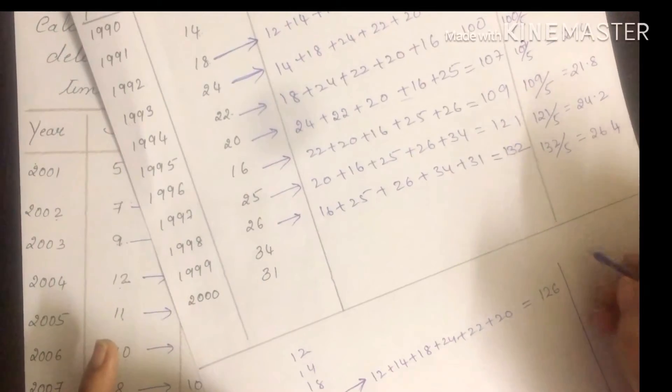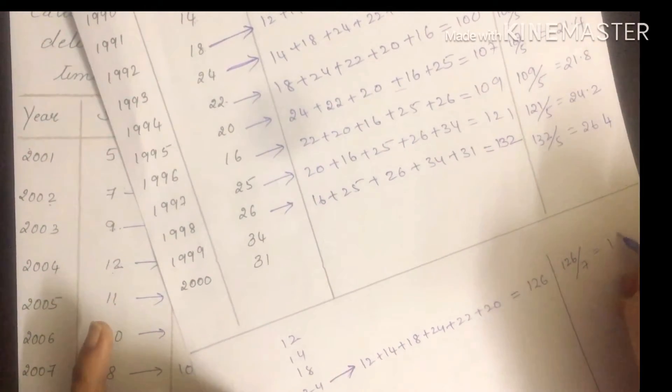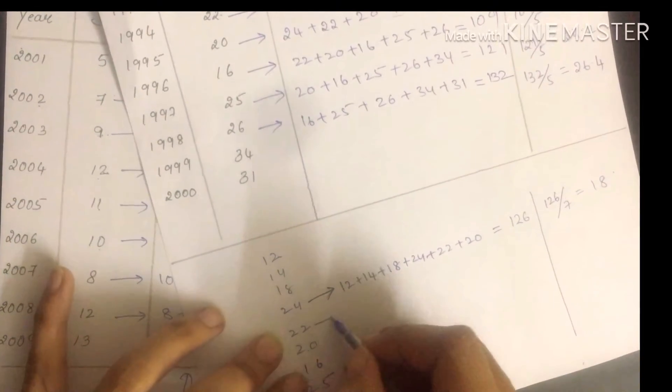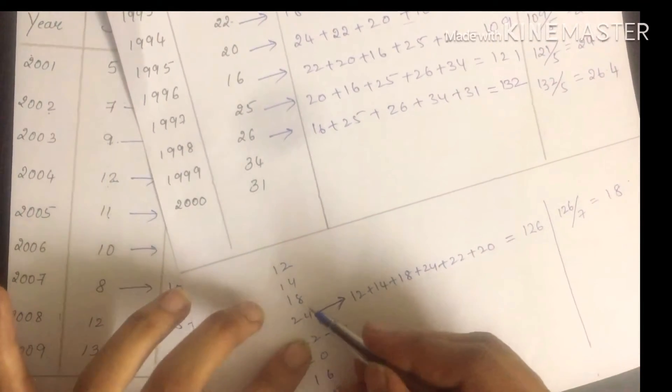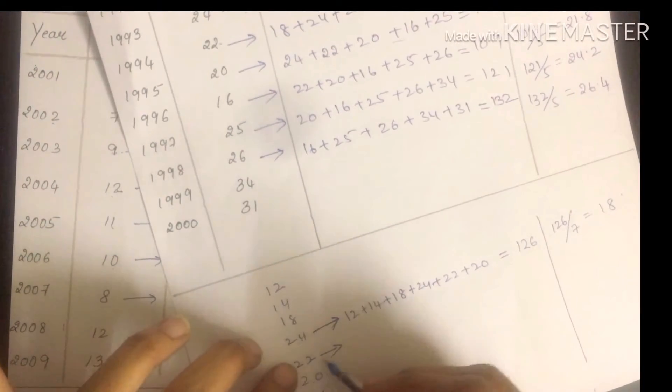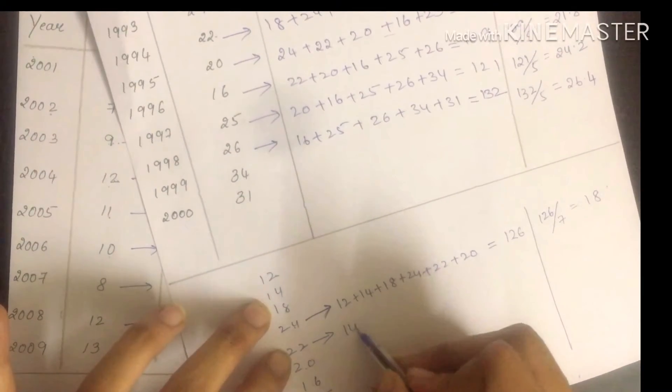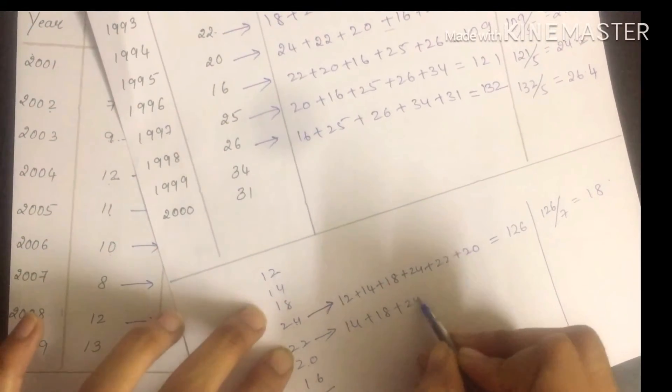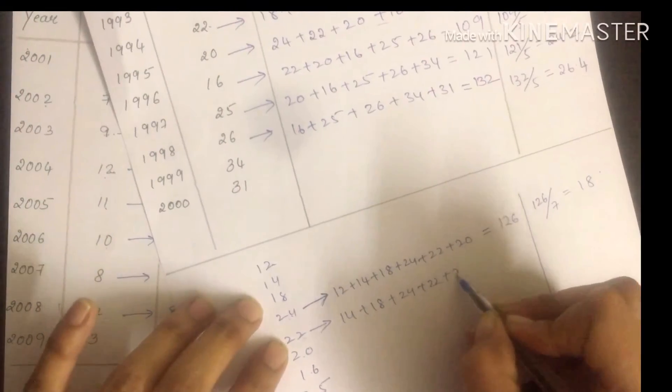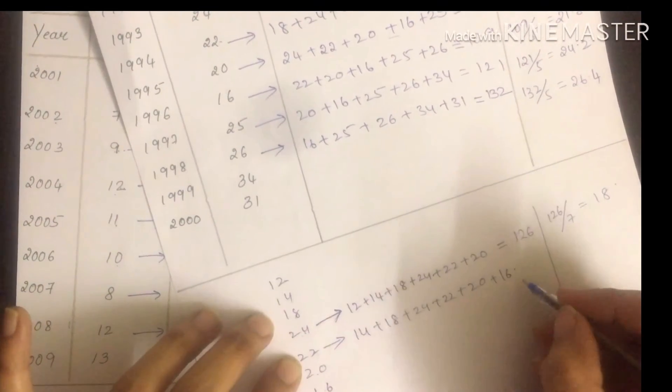The moving average for 7 years is 126 divided by 7 equals 18. 7 means 1, 2, 3, 4, 5, 6, 7. So above 3 and below 3. 14 plus 18 plus 24 plus 22 plus 20 plus 16 plus 25.